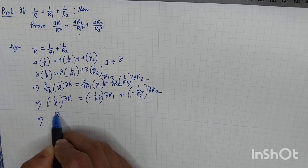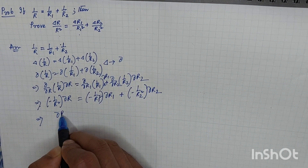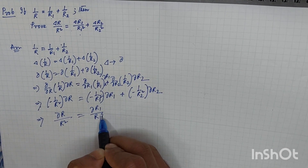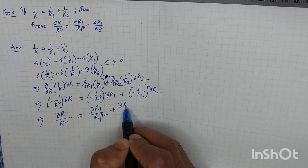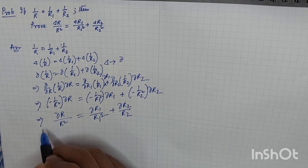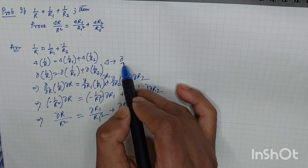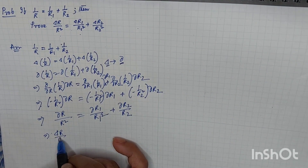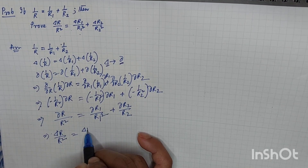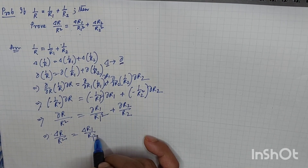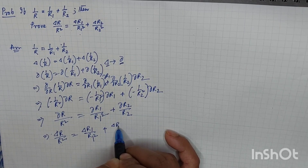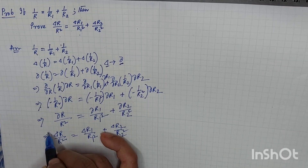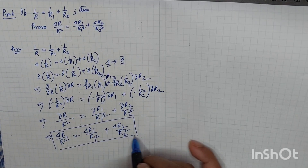Taking the minus sign common from both sides, it cancels out, and we arrive at: ΔR/R² = ΔR1/R1² + ΔR2/R2². This is the result we needed to prove.